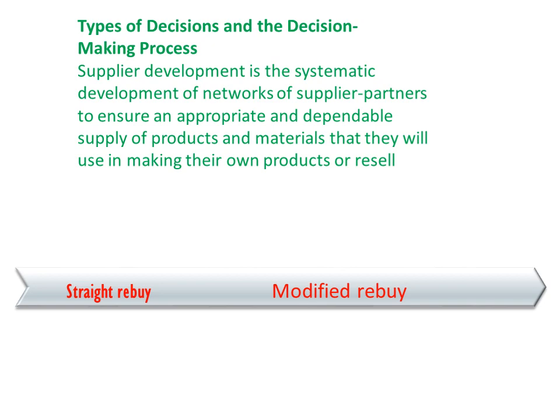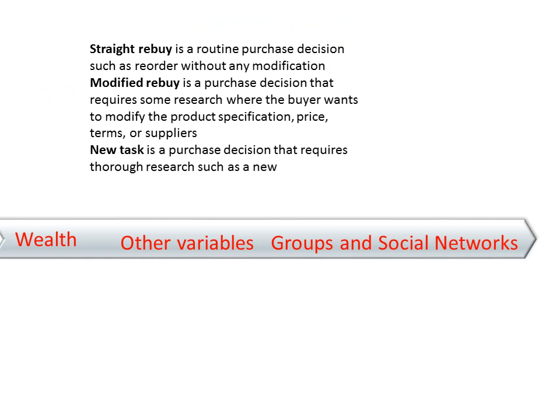It also contains straight rebuy and modified rebuy. Straight rebuy is a routine purchase decision such as a reorder without any modification. Modified rebuy is a purchase decision that requires some research where the buyer wants to modify the product specification, price, terms, or supplier.